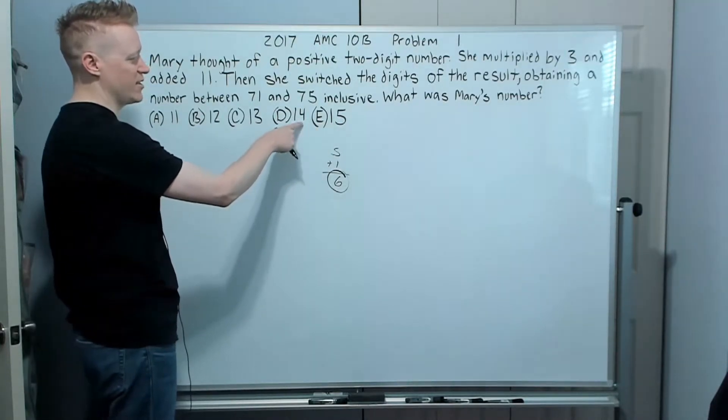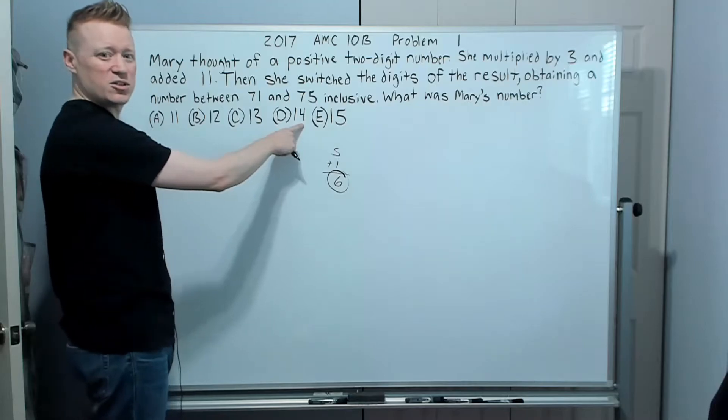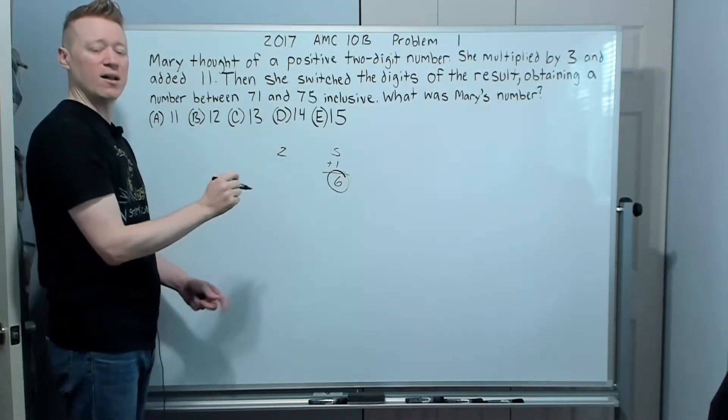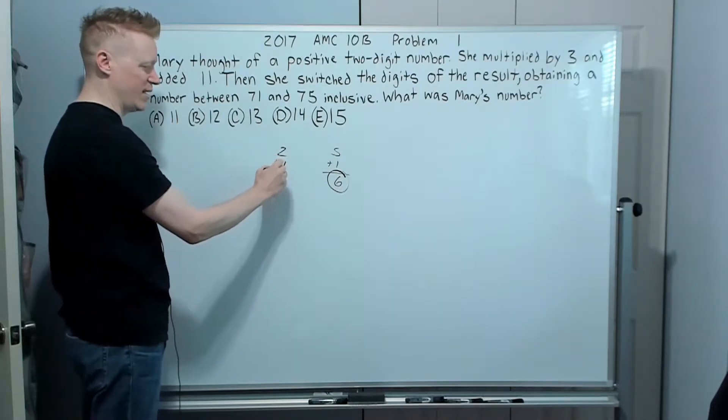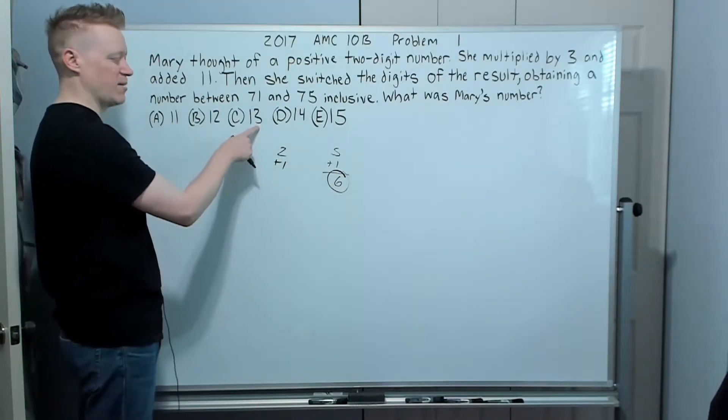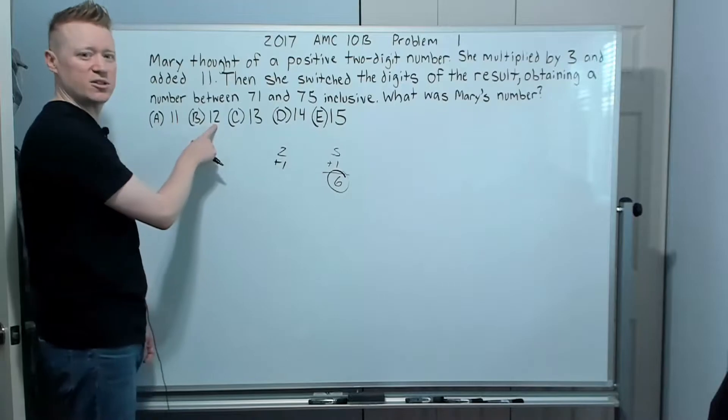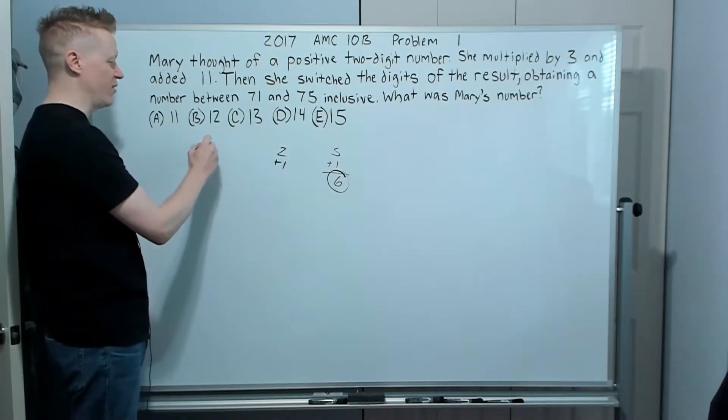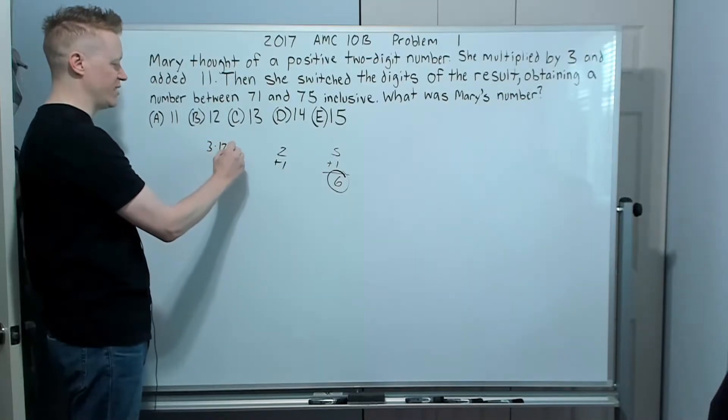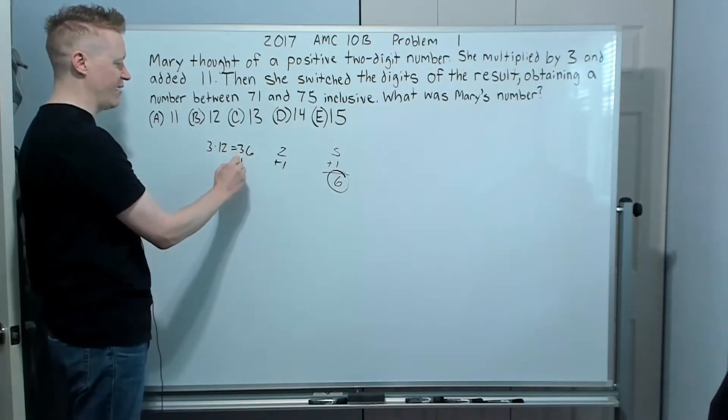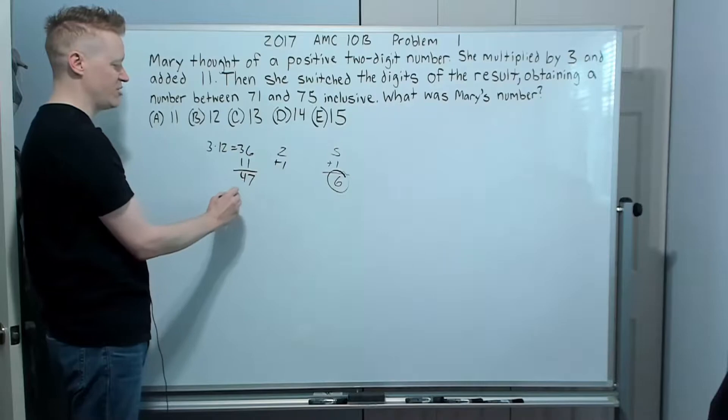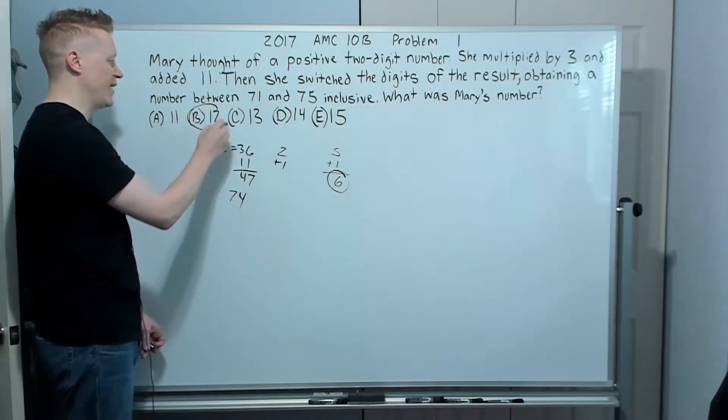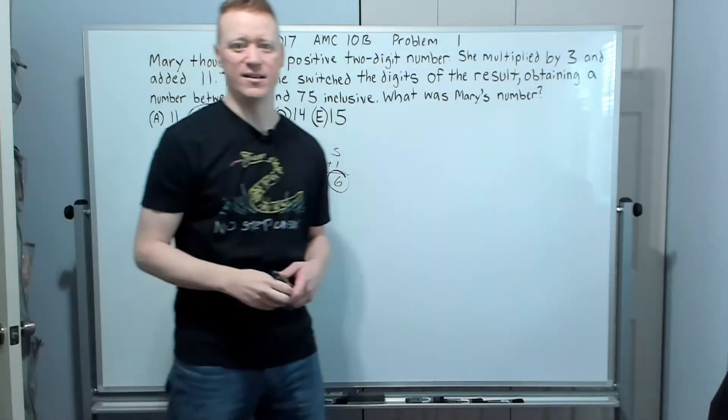And we can do a quick check and go, is that a seven? No, it's not. So that's not the answer. Try this one. Three times four is 12. That's two is the units digit. We don't care about the tens digit, not relevant for us right now. Add one. That's not a seven. Three times three is nine plus one. No, three times two is six plus one is seven. This is probably going to work. Let's just check it out. Three times 12 is 36. Add 11, you get 47. Sure enough, when we flip that around a number between 71 and 75 onto the next problem.